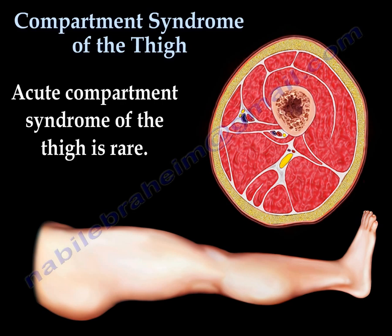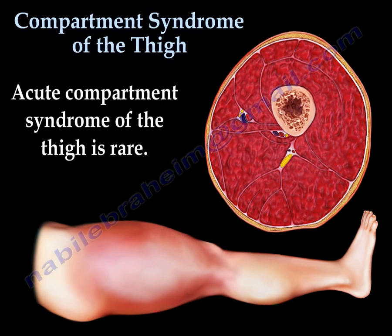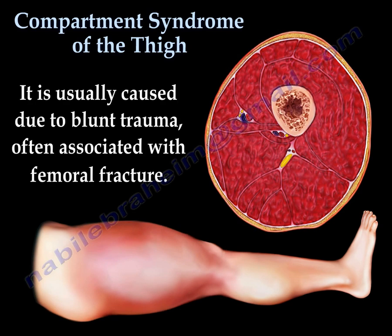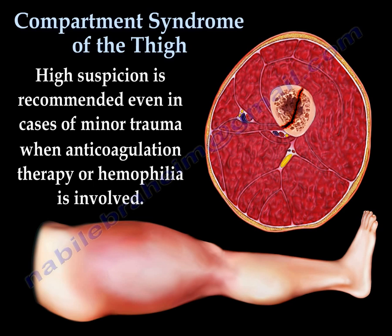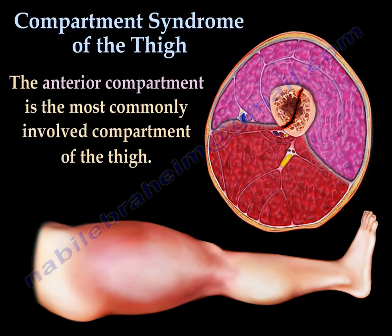Acute Compartment Syndrome of the Thigh is rare. It is usually caused by blunt trauma and often associated with femoral fractures. A high index of suspicion is necessary in a patient with a swollen thigh with minor trauma, a patient on anticoagulation therapy, or a hemophilic patient. The anterior compartment is the most commonly involved compartment of the thigh.